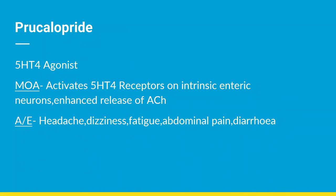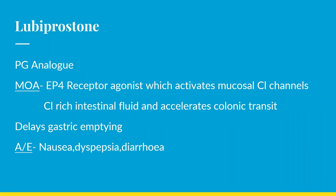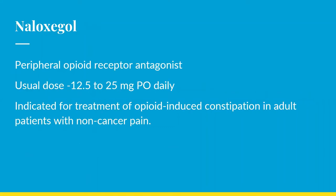Prucalopride is a 5-HT4 receptor agonist that also acts as a stimulant laxative. Its mechanism of action is that it activates the 5-HT4 receptor on intrinsic afferent neurons, enhancing the release of acetylcholine, which propagates the movement of fecal material to the colon. Major side effects include headache, dizziness, fatigue, abdominal pain, and diarrhea. Lubiprostone is a prostaglandin analog whose mechanism of action involves EP4 receptor agonism, which in turn activates mucosal chloride channels. This causes increased intestinal fluid, accelerating colonic transit. It also delays gastric emptying, promoting further bowel movement. Adverse effects associated with lubiprostone are nausea, dyspepsia, and diarrhea.